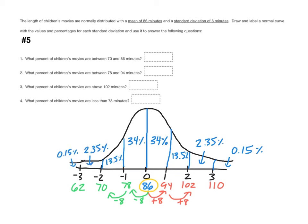What percent of children's movies are between 70 and 86 minutes? Let's find those values on our curve. 70 minutes is right here, and 86 minutes is the mean right in the middle. Between 70 and 86 are two sections — one is 13.5% and the other is 34%. So you just need to add 13.5 plus 34, which is 47.5%. That's your final answer for number one — you'll drag and drop 47.5%.